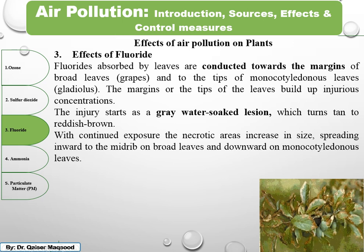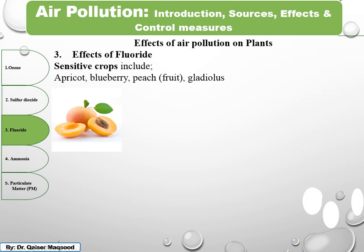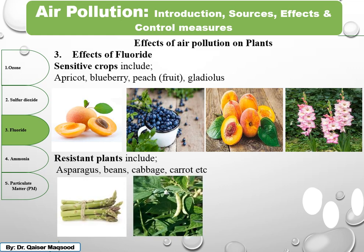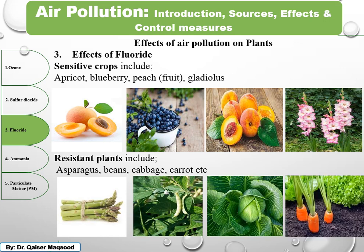The injuries start as a grey water-soaked lesion, turning tan to reddish-brown as exposure continues. With continued exposure, the necrotic areas increase in size, spreading from the tip or margin. Among sensitive crops are apricot, blueberry, peach, and gladiolus. Among resistant plants are asparagus, beans, cabbage, and carrot.